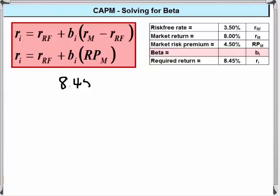So we're going to have 8.45, our required return, is equal to the risk free rate, 3.50, plus beta times the market risk premium.